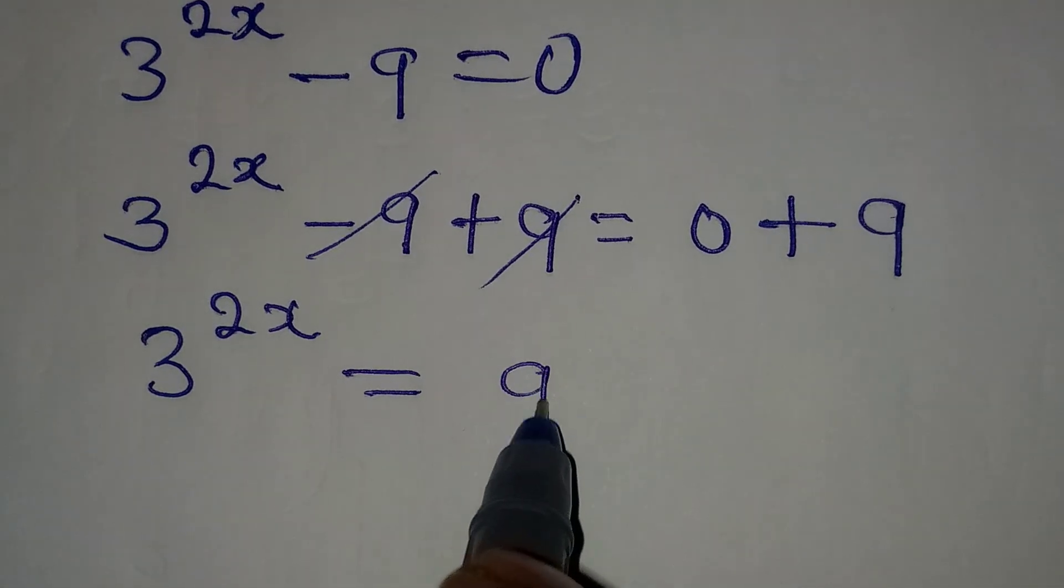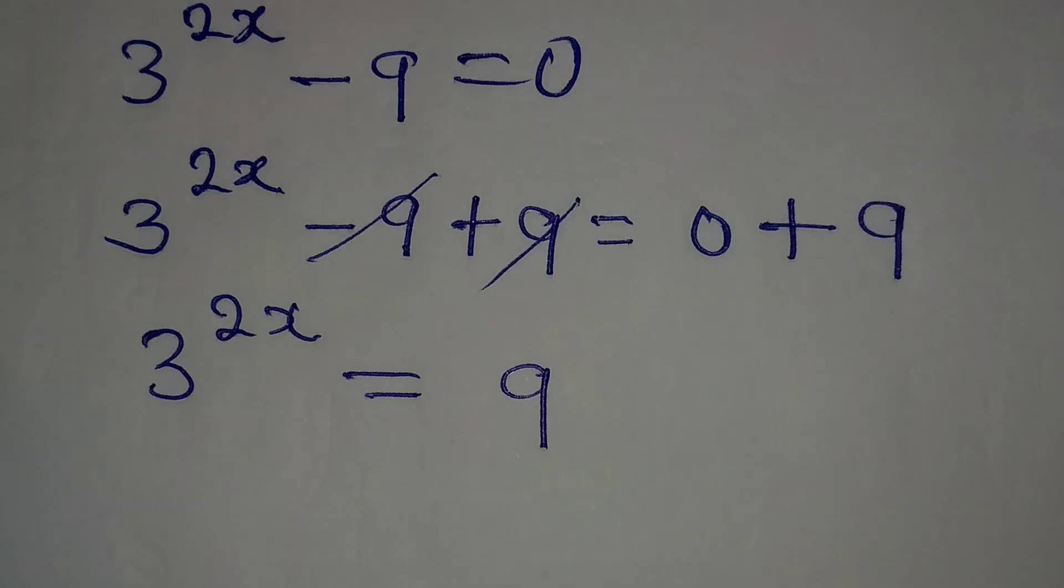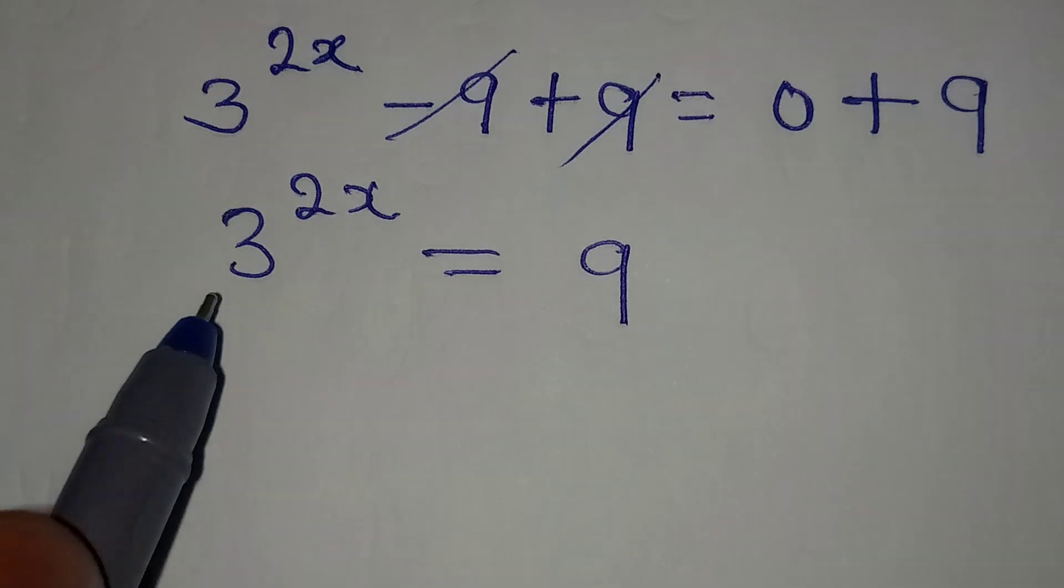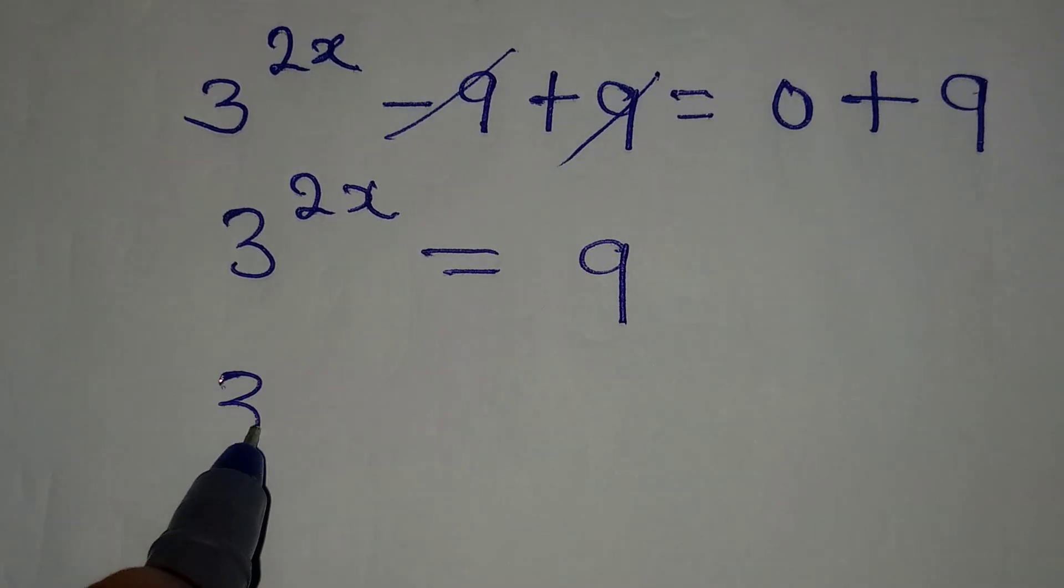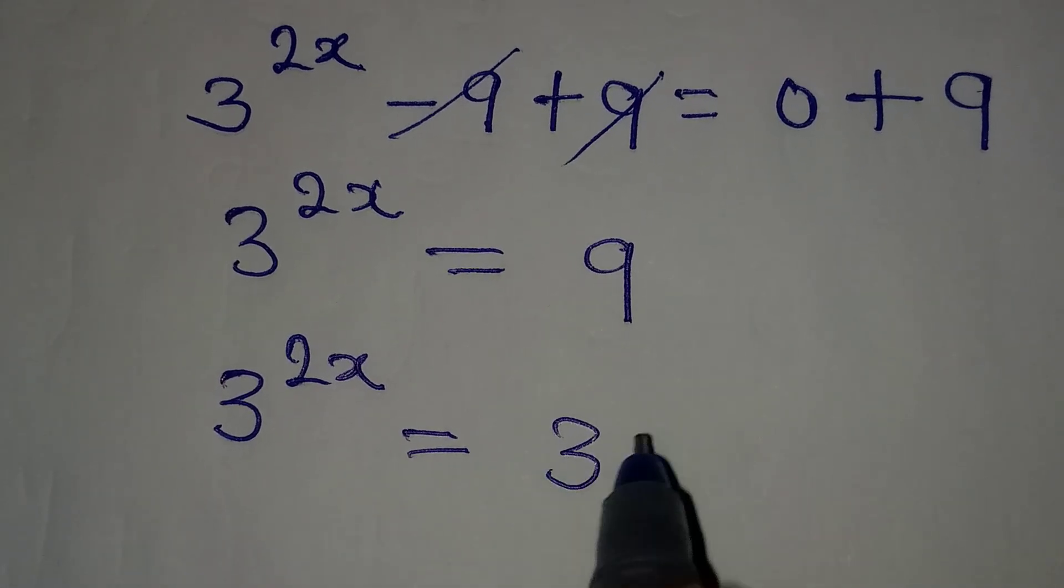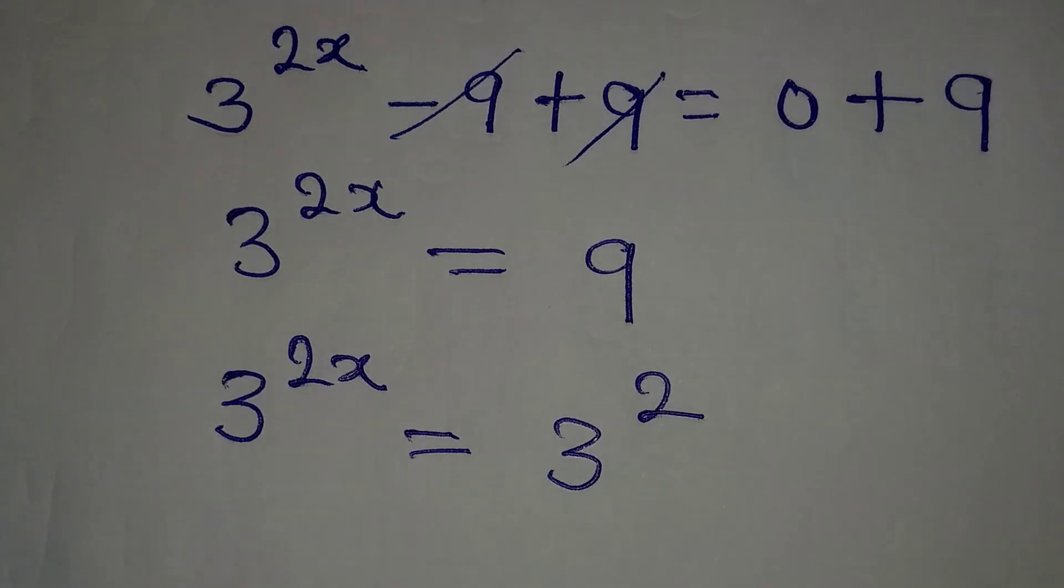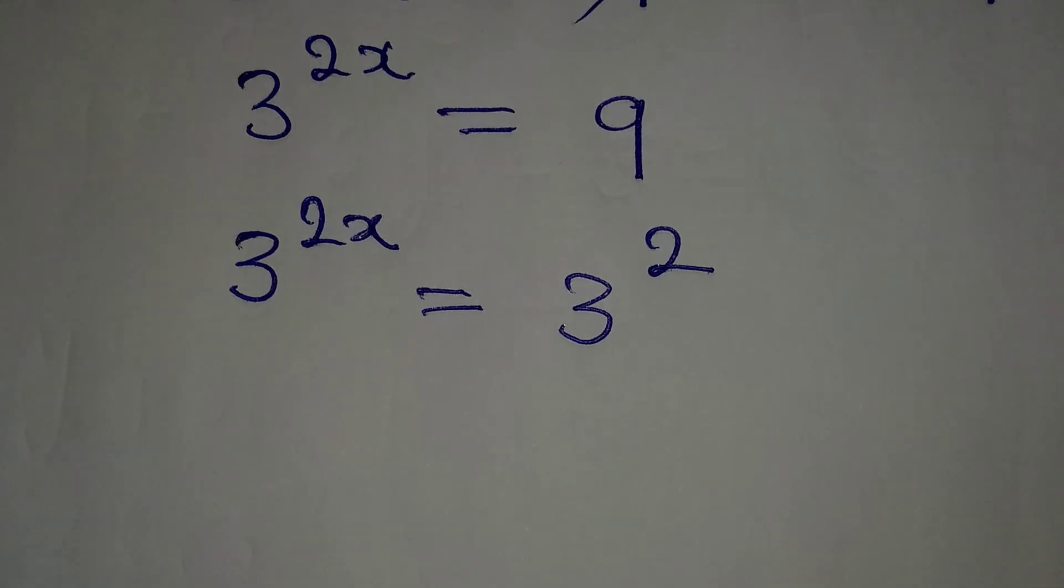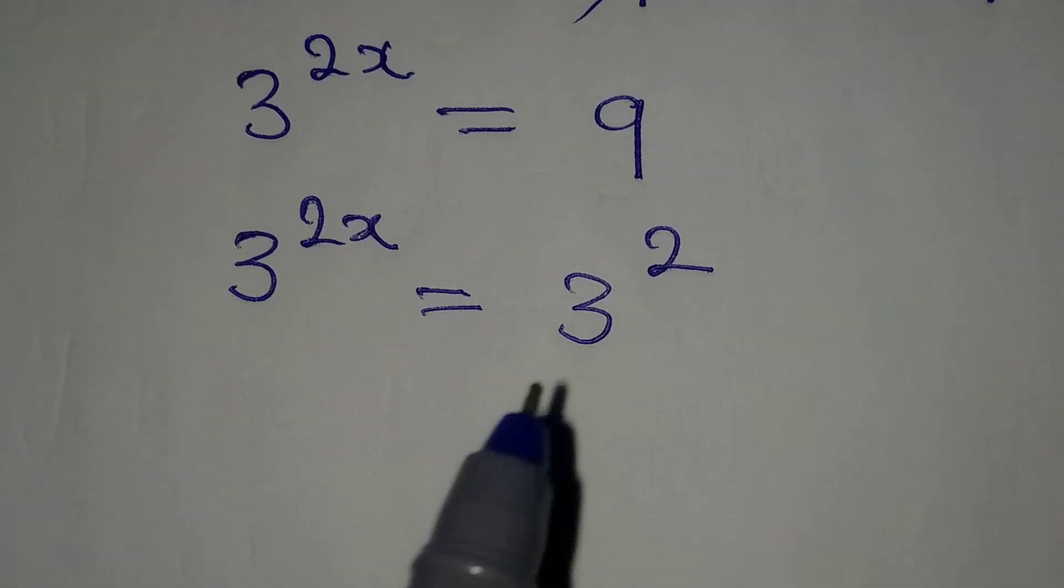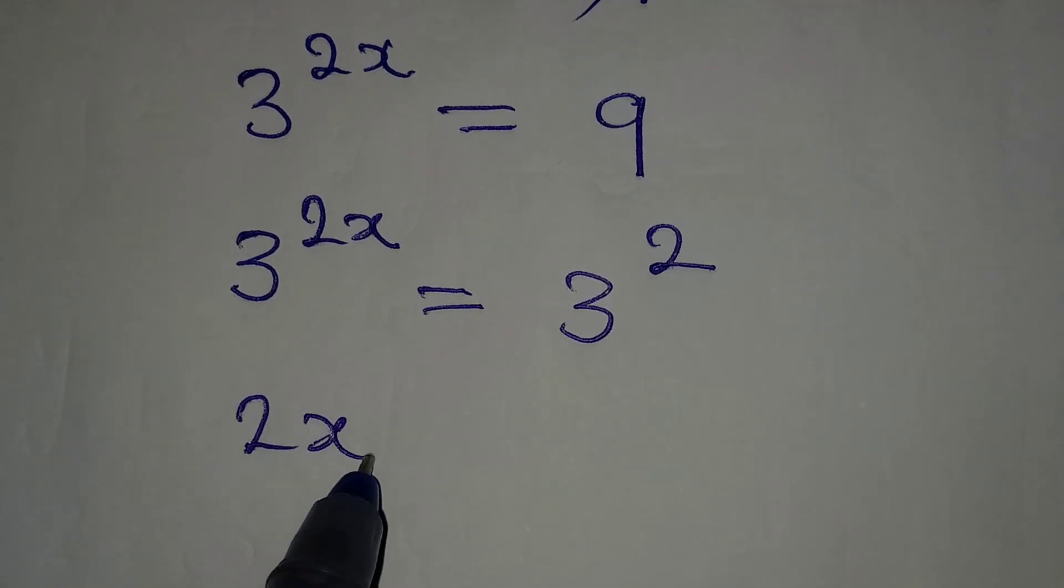Now what again do I do? Remember that I can still write 9 to have 3 as the base. So 3 to the power of 2x should be equal to 3 to the power of 2. This equally means that the powers are equal because the bases are equal, so 2x is equal to 2.